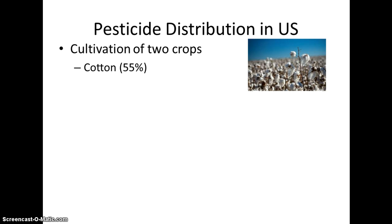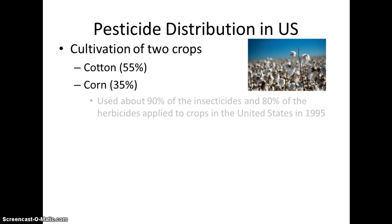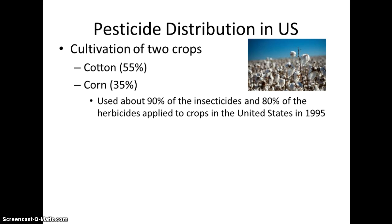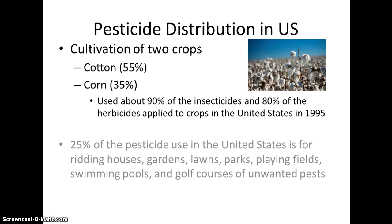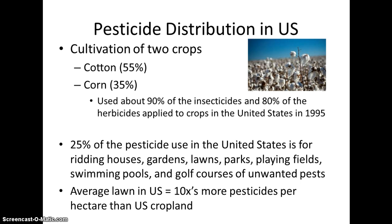In the U.S., our main use of pesticides is for cotton and corn. Corn accounts for about 90% of insecticide use and 80% of herbicide use applied to crops. Insecticides target insects; herbicides target plants or weeds. About a quarter of pesticides are used in homes for termites, spiders, and ants, as well as in gardens, lawns, parks, playing fields, golf courses, and swimming pools. In fact, the average U.S. lawn has 10 times more pesticides per hectare than U.S. cropland.